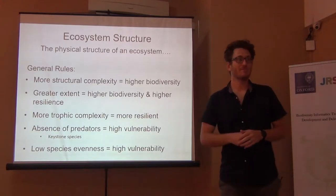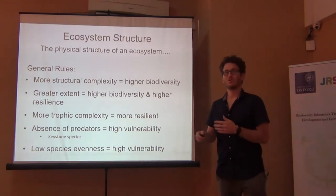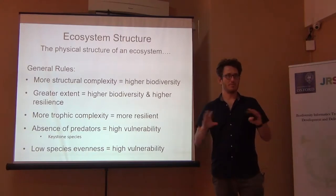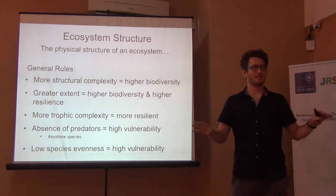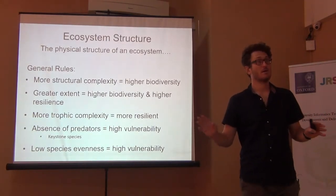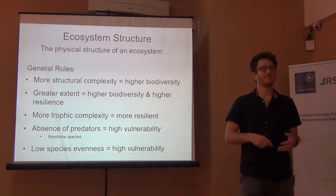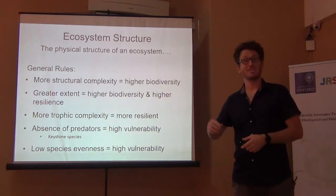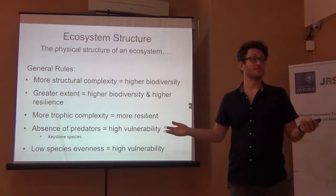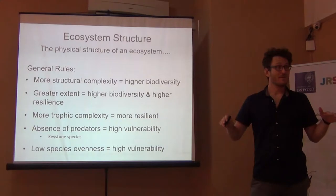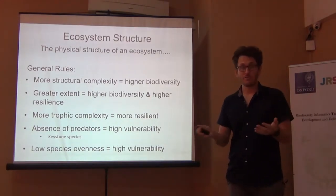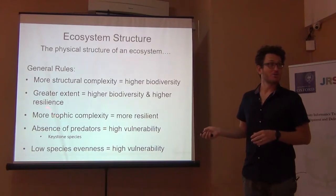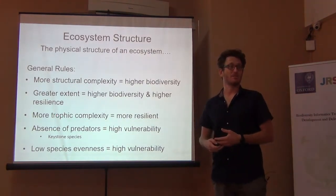Also related to this is the idea of species evenness — when you have too many of one species. A perfectly even system would have the same number of all species, which doesn't really exist, but we can have more or less evenness. When we have less evenness, one species is dominating, and that's less resilient: if we lost that dominant species, we'd lose a big part of how the ecosystem functions. If it were more even and you lost one species, the others would fill in the gap. These are ways in which ecosystem structure directly translates into diversity and ecosystem function.